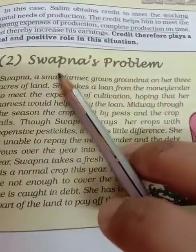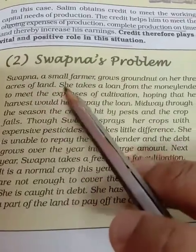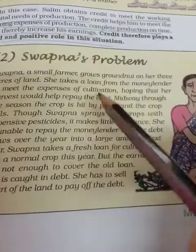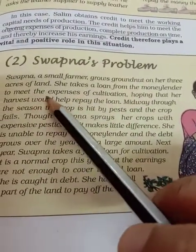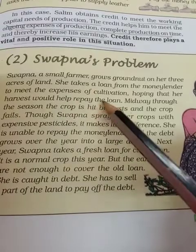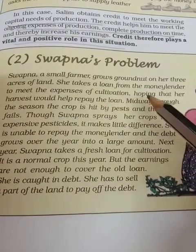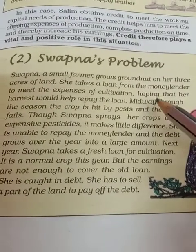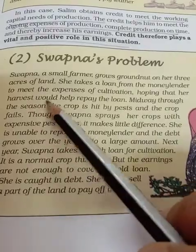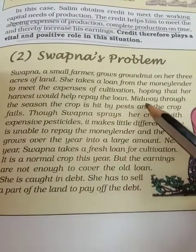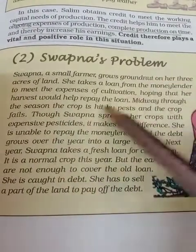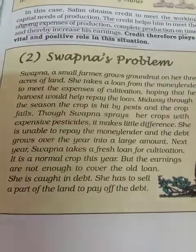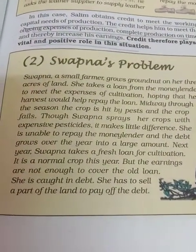Now there is another problem — Swapna's problem. Swapna, a small farmer, grows groundnut on her three acres of land. She takes a loan from the moneylender to meet the expenses of cultivation. The moneylender is an informal source of credit. She was hoping that her harvest would repay the loan. However, midway through the season, the crop is hit by pest and the crop fails.